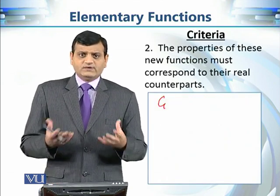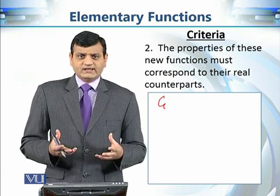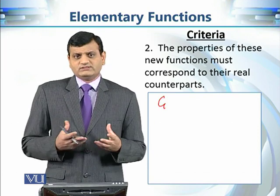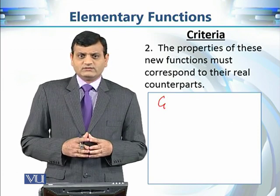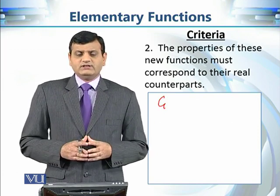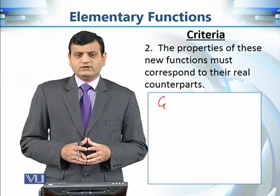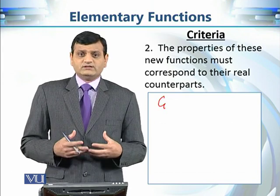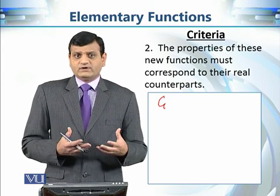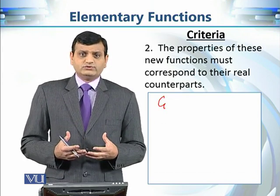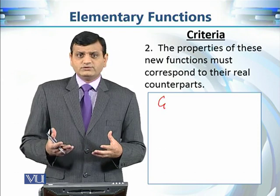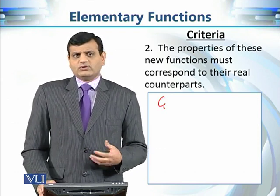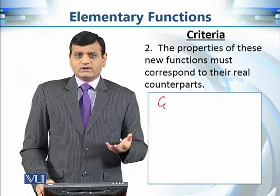We should also get the same properties. For example, cos²x + sin²x = 1, the derivative of the exponential function should equal itself, and e^(z1+z2) = e^z1 · e^z2. These are properties we expect our newly constructed complex versions of real-valued functions to satisfy.